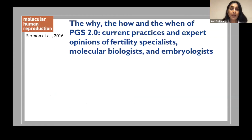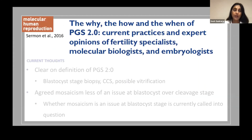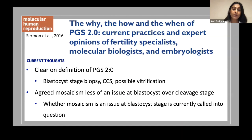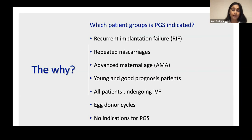An opinion paper in Human Reproduction by clinical, biological, and embryological experts in PGS discussed current practices and the future of PGS. They clarified that second generation PGS involves blastocyst stage biopsy, comprehensive chromosome screening, and vitrification. Mosaicism is less of an issue at blastocyst stage compared to cleavage stage — but we still don't know to what level mosaicism is an issue at the blastocyst stage, and research is ongoing.